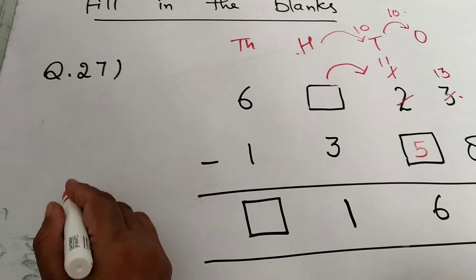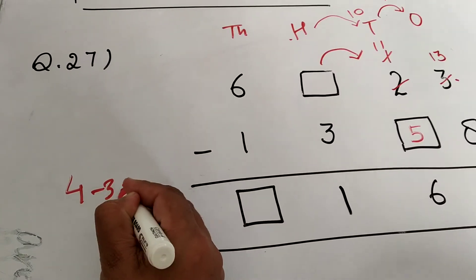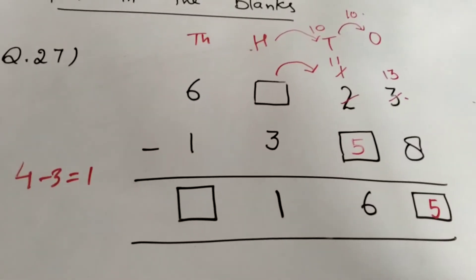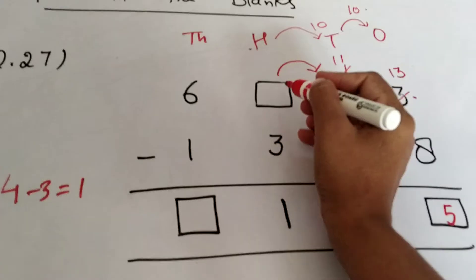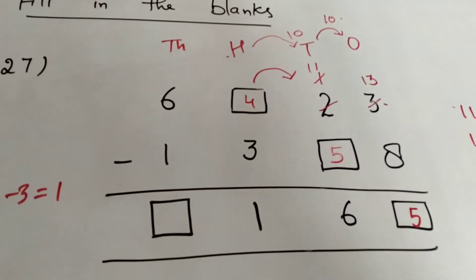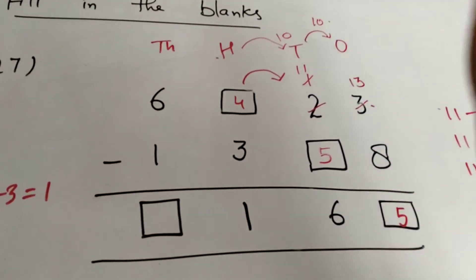And that number is of course 4, because 4 minus 3 is 1. So should we write 4 here? Wait, we cannot write 4 here.